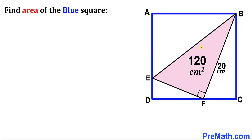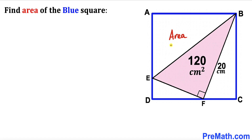Welcome to PreMath. In this video we have got a pink right triangle EFB fully confined in a blue square ABCD, as you can see in this diagram, such that the area of this pink triangle is 120 centimeters squared and the side length BF is 20 centimeters. Our task is to calculate the area of this blue square ABCD.